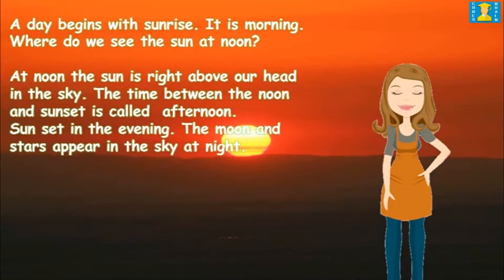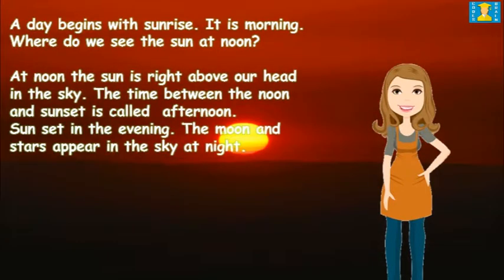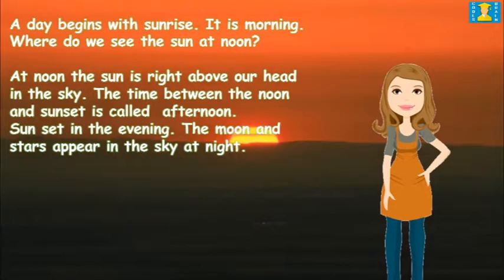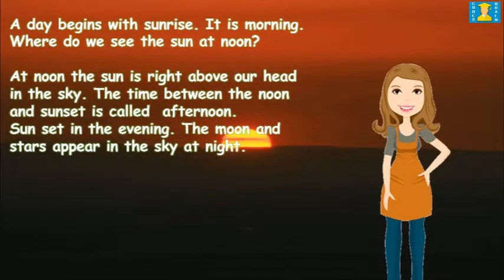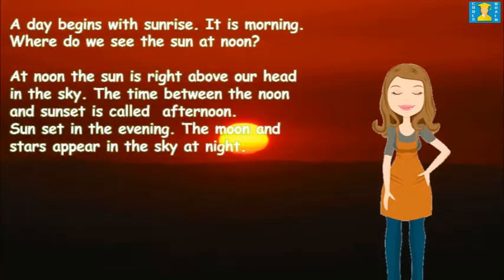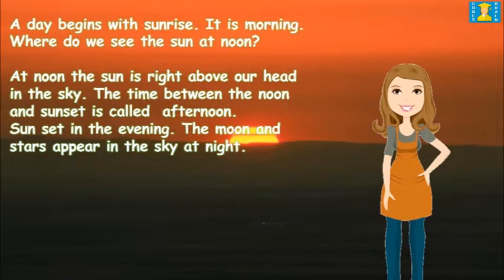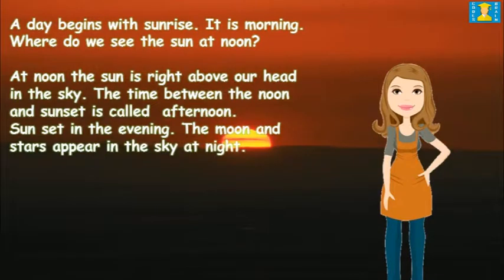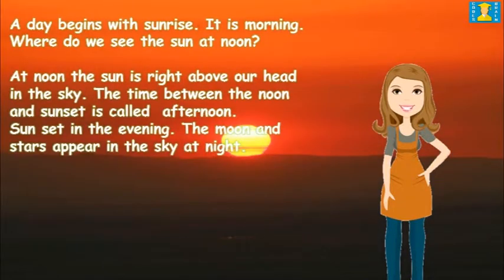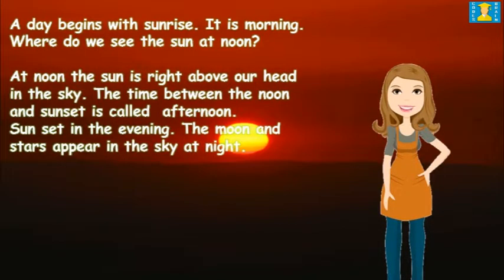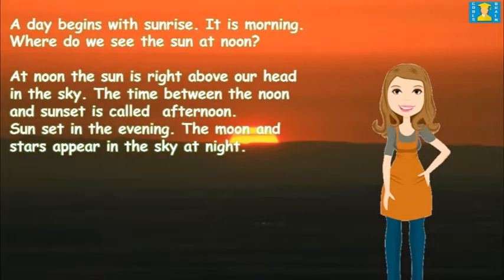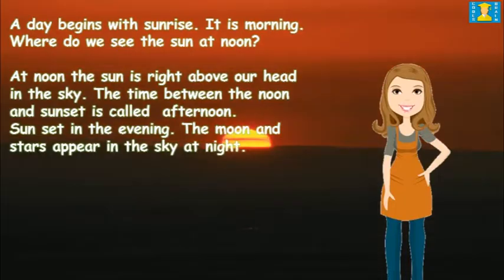The time between noon and sunset is called afternoon. Sunset in the evening. The moon and stars appear in the sky at night.